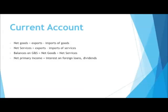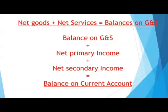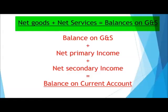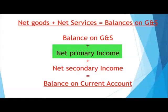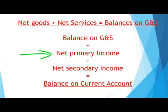That's why generally the current account as a whole is always in deficit. Net secondary income covers foreign pensions, aid payments, and other non-reversible transactions. There are mathematical relationships: net goods plus net services equals balance on goods and services. When we add net primary income and net secondary income to that, we get the balance on current account. Because net primary income is made up largely of interest payable on foreign loans, and Australia has billions of those, our balance on current account is always in deficit — hence the term CAD.